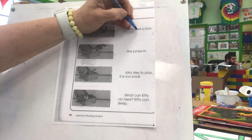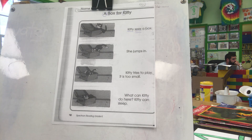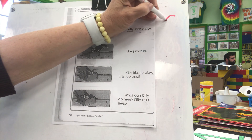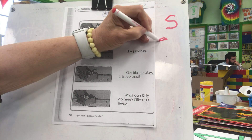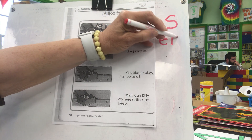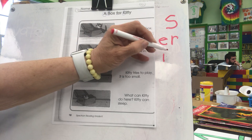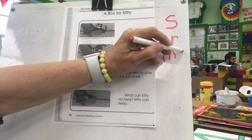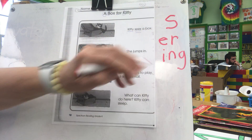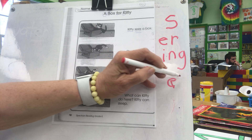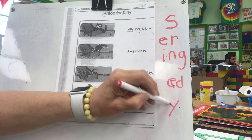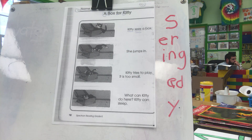The verb is sees — that's what Kitty is doing. Remember that our action verbs can end with S, like sees. Or E-R, she's a seer. Or I-N-G, she is seeing. Or E-D. Or sometimes Y.